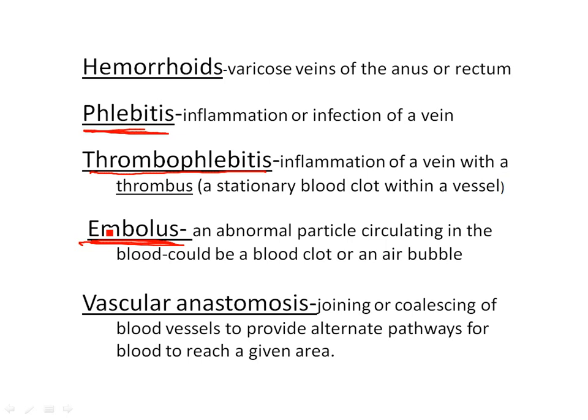Finally, vascular anastomosis is not necessarily a problem — it's where blood vessels join or merge to provide alternate pathways for blood to reach a given area. You'd naturally find lots of anastomoses in the brain, kidney, and heart, because if one area gets blocked off, you want alternate routes for blood to get around that. They're also common in joints — think about how many different movements a knee joint makes and how that could pinch off different circulations, so you need another way to get blood flowing around those areas.